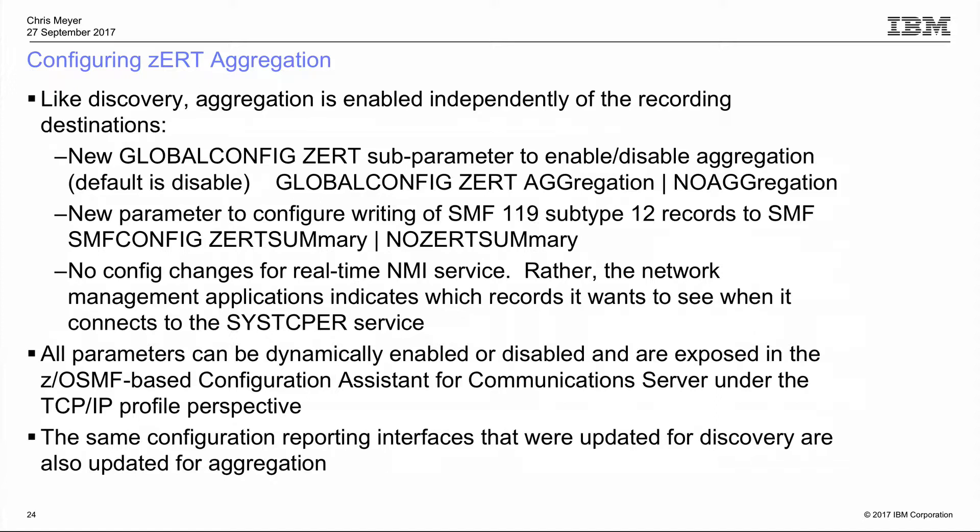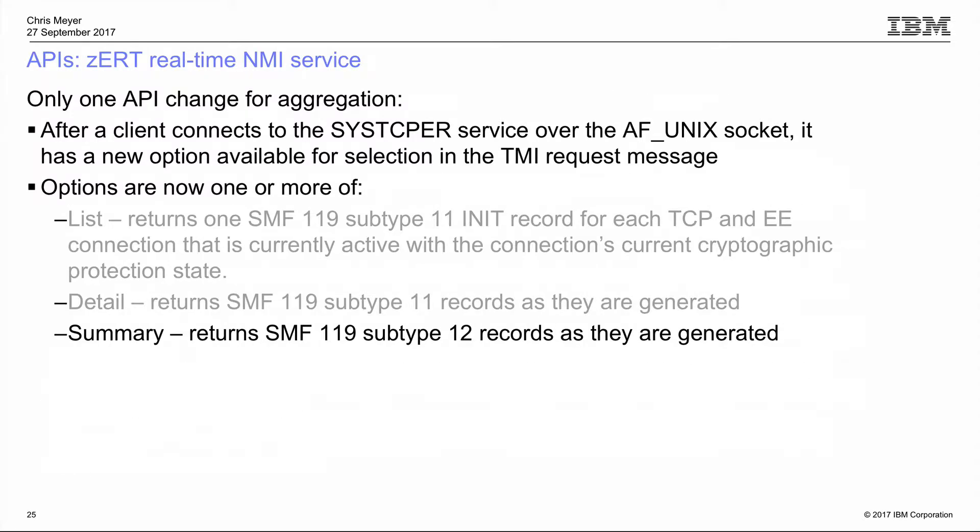To configure aggregation, you add an AGGREGATION subparameter to GLOBALCONFIG ZERT — it requires GLOBALCONFIG ZERT already specified. SMFCONFIG gets a ZERTSUMMARY parameter to write subtype 12 records to SMF. For the real-time NMI, no config changes are needed; instead the client specifies a new flag for ZERT summary records in its NMI request message. Aggregation can also be dynamically enabled and disabled, and is exposed in the Configuration Assistant.